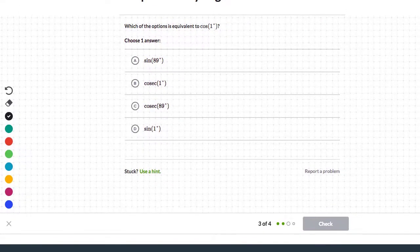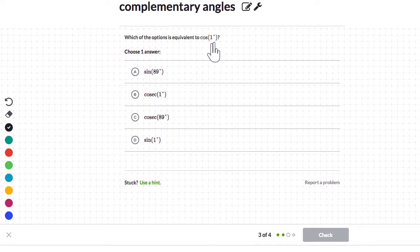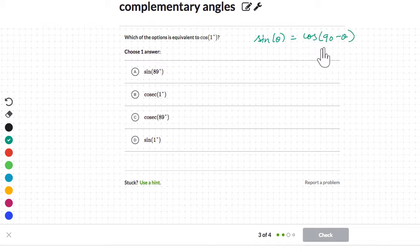So here we say, which of the options is equivalent to cos of one degree? Now once again, I know that, just like cosecant and secant share a relationship, sine and cosine too, so sine of theta will be equal to cos of 90 minus theta. And once again, you can draw the diagram to verify this is true.